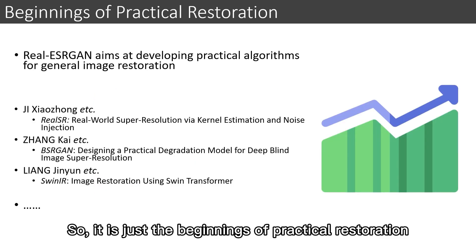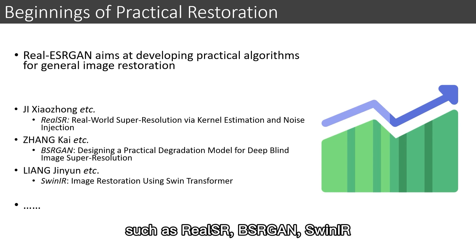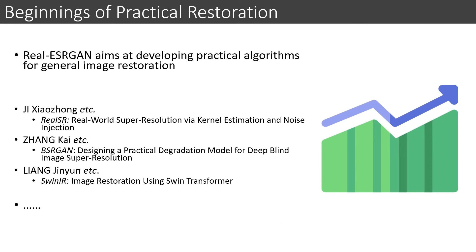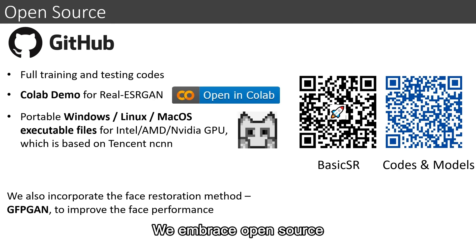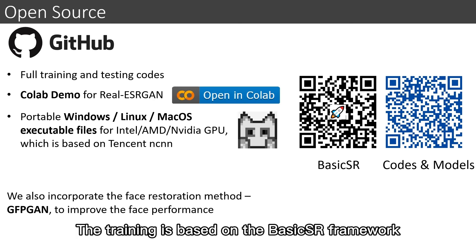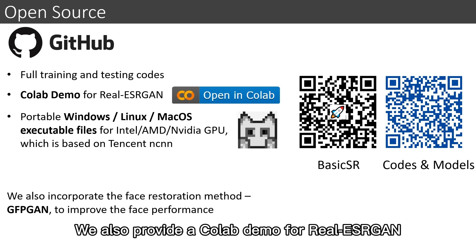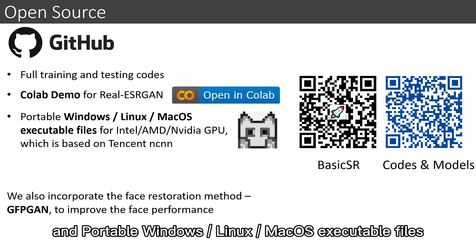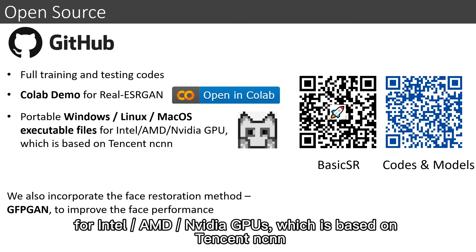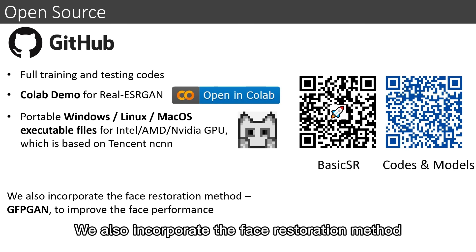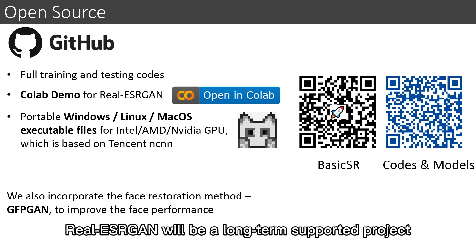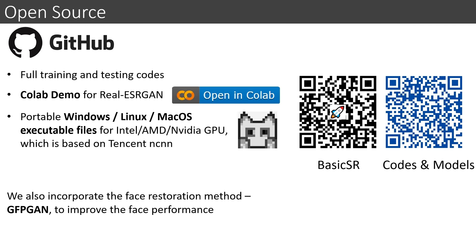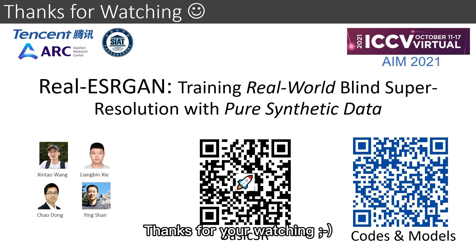This is just the beginning of practical restoration. Other excellent works include Real-SR, BSR-GAN, and SwinIR, and we believe there will be more and more practical works towards real-life applications. We embrace open source — all training and testing codes are available on GitHub, based on the BasicSR framework. We also provide a Colab demo and portable Windows, Linux, and macOS executable files for Intel, AMD, and Nvidia GPUs, based on Tencent NCNN. We incorporate the face restoration method GFP-GAN to improve face performance. Real-ESRGAN will be a long-term supported project, continuously updated. You can find more information on the GitHub project page. Thanks for watching.